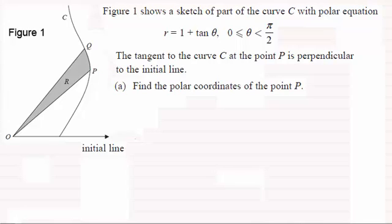Okay, welcome back then if you had a go. So let's just run through the question. What we've got is a tangent to the curve C at the point P here is perpendicular to the initial line. So let's just draw that in, something like that.